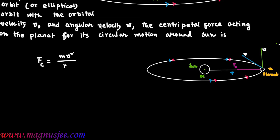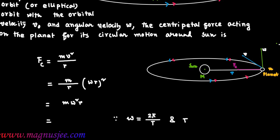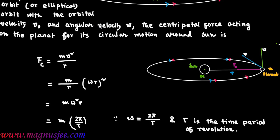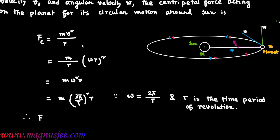FC equals mv² divided by r — mass times square of orbital velocity divided by mean distance r. In place of v, we write omega times r, giving FC = mω²r. Since omega equals 2π divided by T, where T is the time period of revolution of the planet around the Sun, we get FC = m(2π/T)²r. Therefore FC = 4π²m divided by T² times r, which is equation 1.